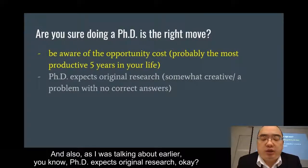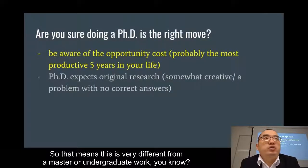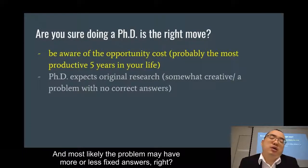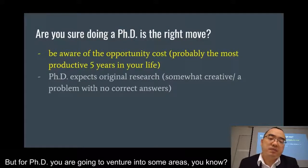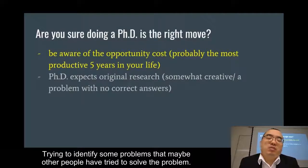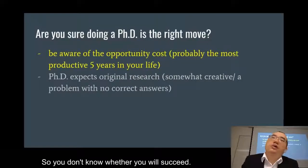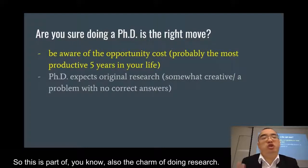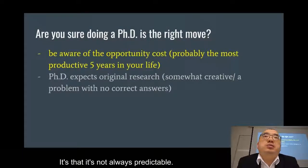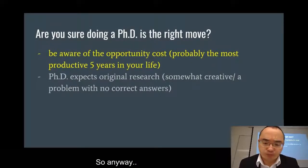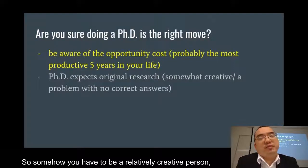A PhD expects original research, which is very different from master or undergraduate work. At the undergraduate level, you apply knowledge from textbooks to solve problems with more or less fixed answers. But for a PhD, you venture into areas trying to identify problems others have tried to solve, and you must come up with better solutions. You don't know whether you will succeed — that's part of the charm of research. It's not always predictable; you could run into trouble or discover something truly revolutionary. You have to be a relatively creative person to do a PhD.